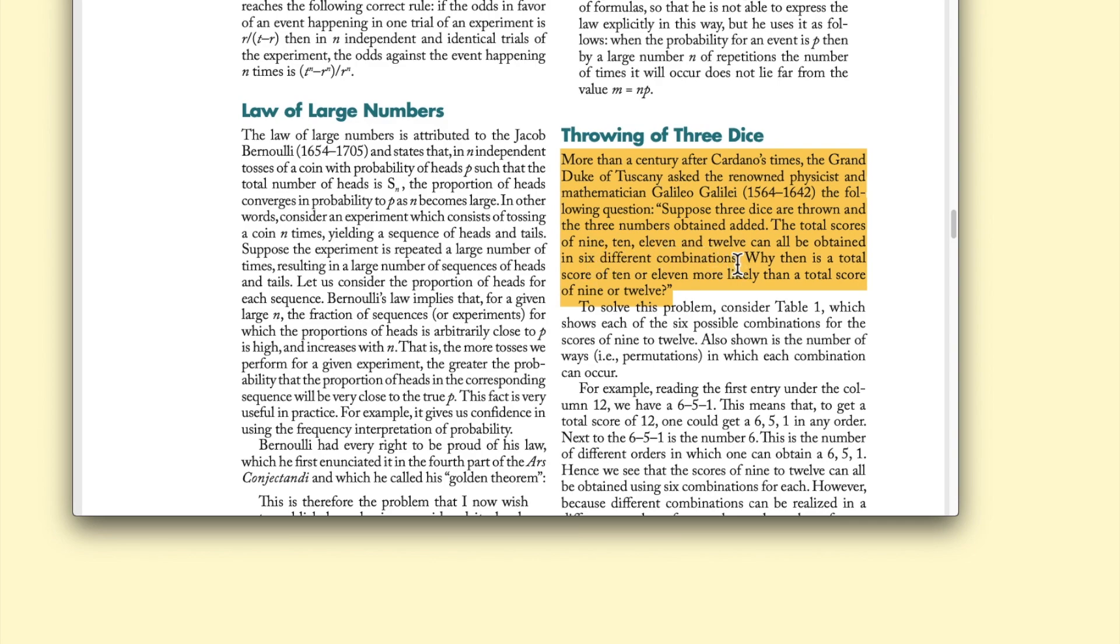I suppose he looked at the numbers on the dice and realized that you can make these totals of 9, 10, 11, and 12 in six different ways using the numbers 1 to 6. Then he asked: why is a total score of 10 or 11 more likely than a total score of 9 or 12? So you can see we're going to well-known mathematicians like Galileo to figure these things out.